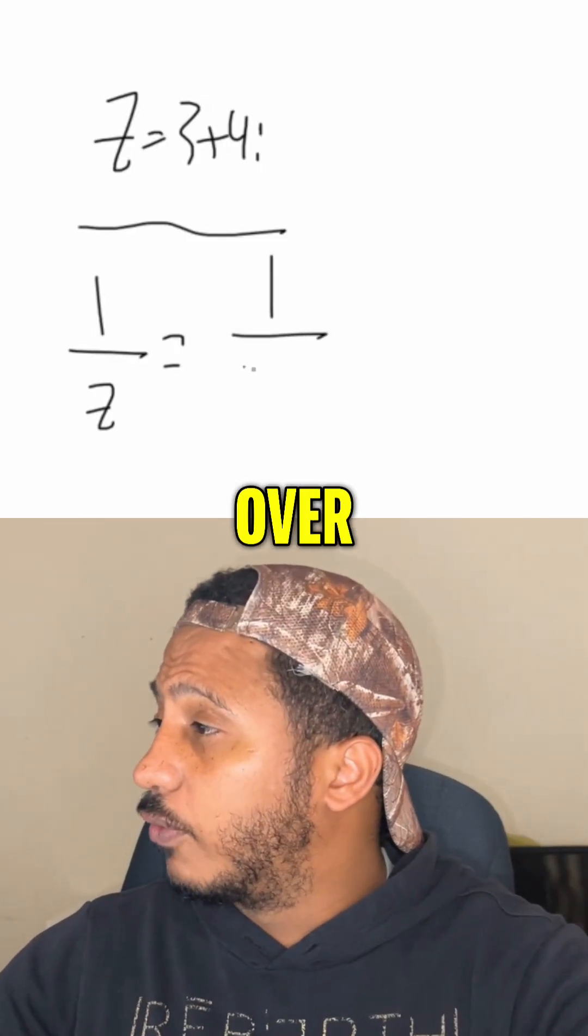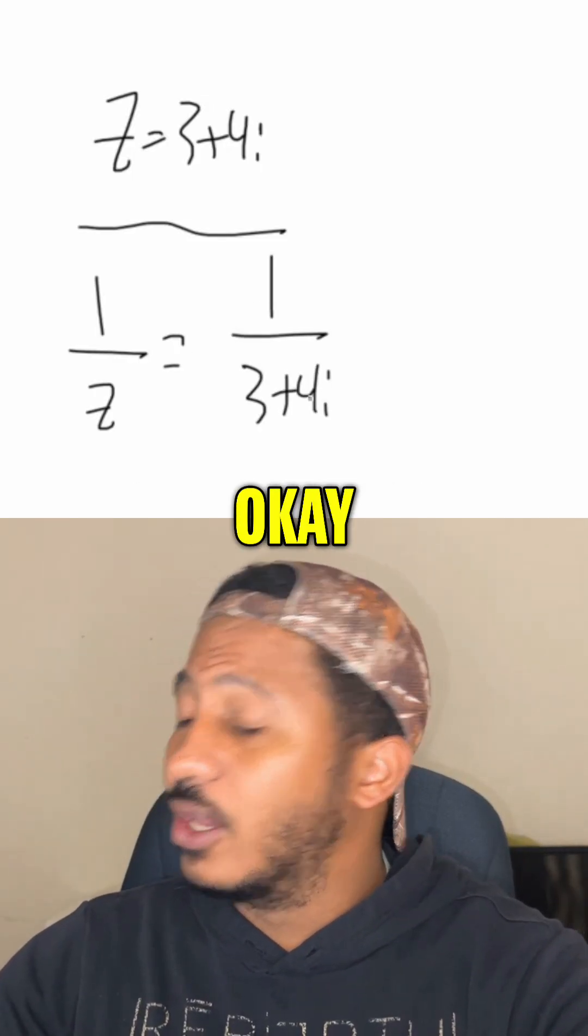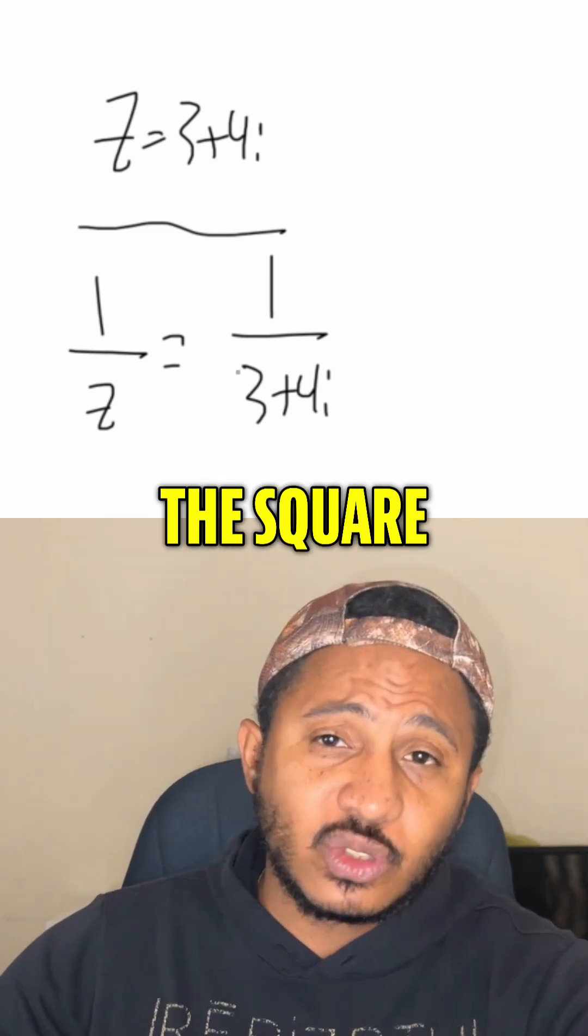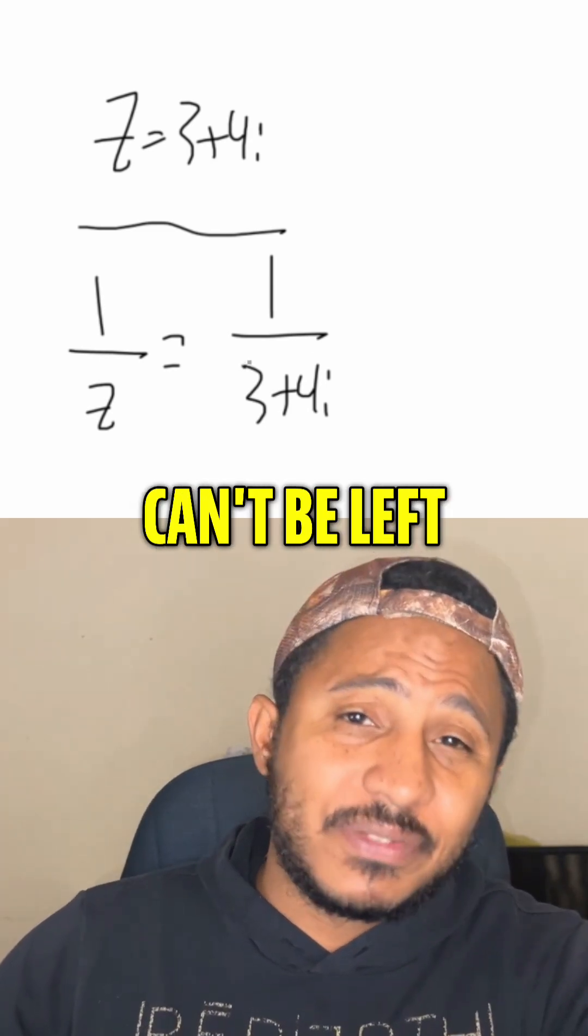So 1 over z would be 1 over 3 plus 4i. So we're flipping it. However, we know that i is the square root of negative 1, and that square root can't be left in the denominator.